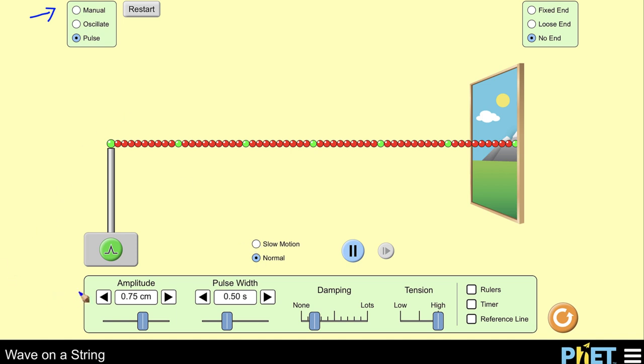Now down toward the bottom, we also have a set of controls here, including amplitude, which is how high the wave will be, the pulse width, how far apart they will be, and then we have the damping and the tension.